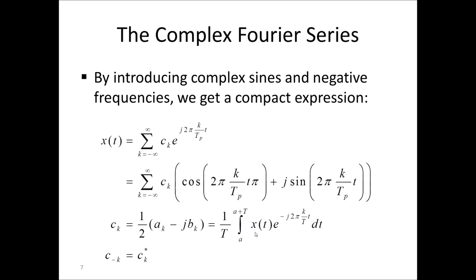An important thing you must understand here is that this is a complex construction, because we have the exponential e to j and so on. But because the signal x of t is real valued, the imaginary parts on the right-hand side of the equation here must be zero, since we have a real valued signal on the left.